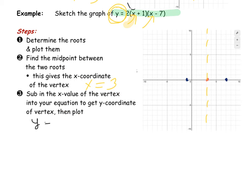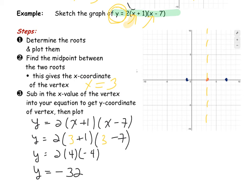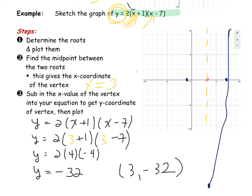My original function was y equals 2 times x plus 1 times x minus 7. Subbing in x equals 3: y equals 2 times (3 plus 1) times (3 minus 7), which is 2 times 4 times negative 4, so y equals negative 32. My vertex is at (3, negative 32). The graph I drew is too small — the vertex is way down at negative 32 — but you'd finish the curve from there.